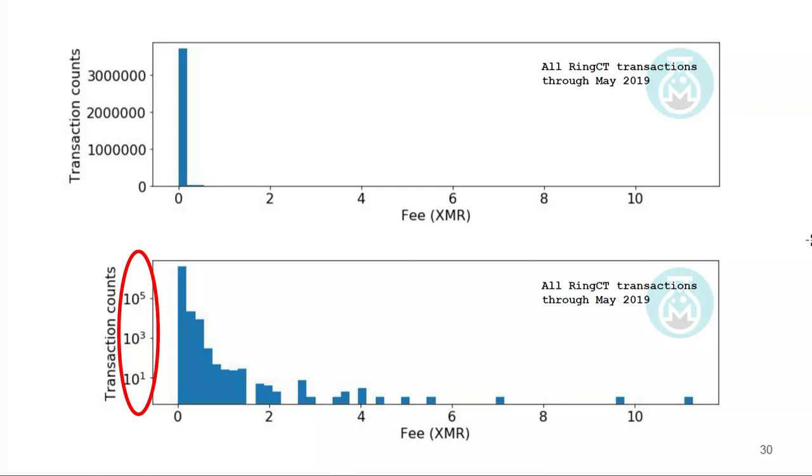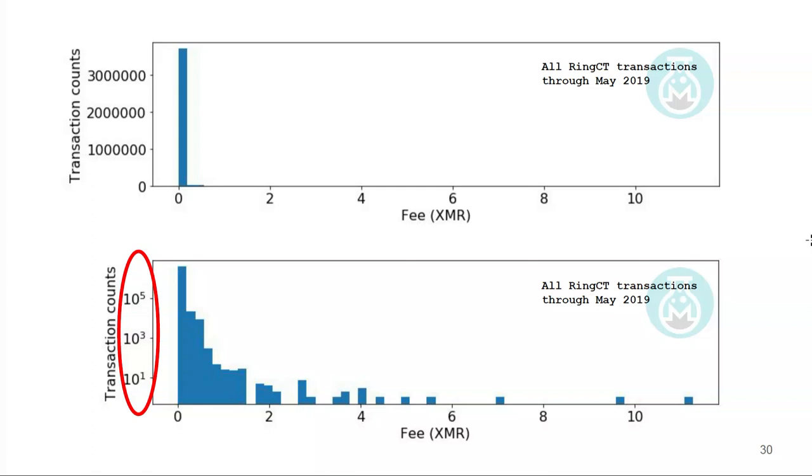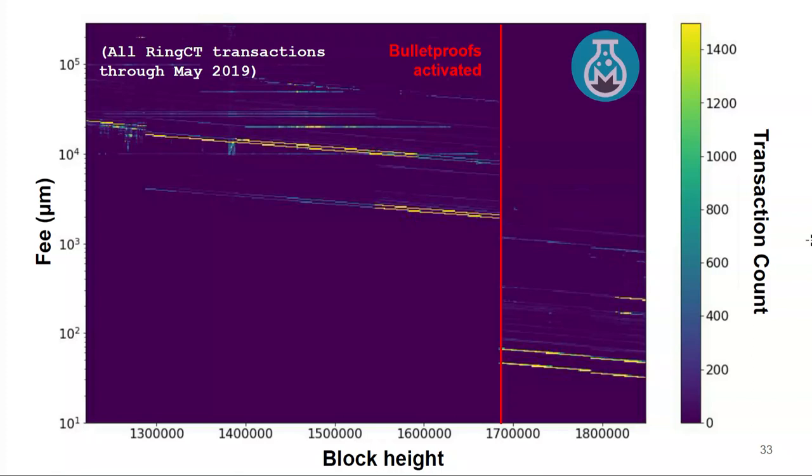Next we look at how fees have changed over time. The x-axis shows all RingCT blocks, and the y-axis is the absolute fee in micro-Monero. We see different fee levels: lowest priority, medium, high priority. Most transactions in these lines are probably using the core software or one implementing the correct fee market. Does anyone know why there's that drop-off just before block 1.7 million? This is exactly where bulletproofs were activated. Since transactions got smaller, fees went down dramatically. If you zoom in, you can see the lower two bands creep in a little bit before the mandatory cutoff as people adopted and upgraded their software early.